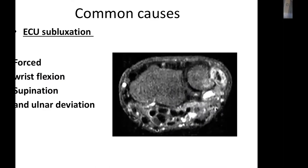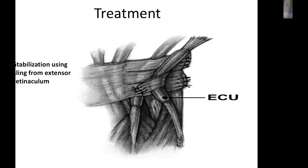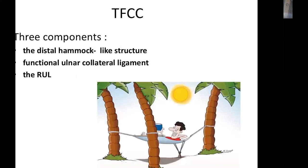Regarding common causes: ECU subluxation presents with an audible clunk and pain with forced flexion, supination, and ulnar deviation. Treatment is by sling stabilization of the ECU tendon through a dorsal approach.